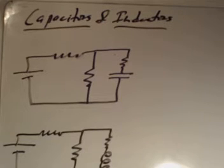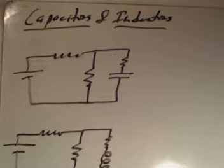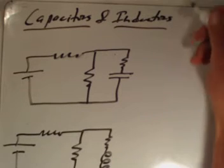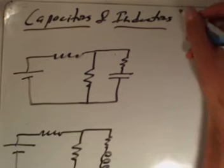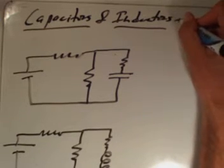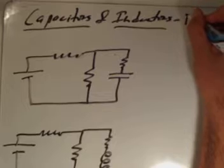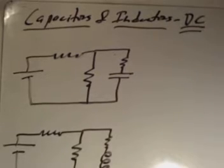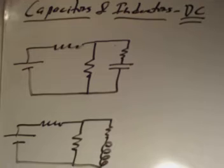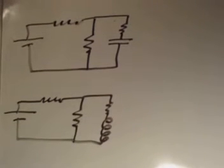In this video, what we'd like to do is discuss the DC circuit behavior of capacitors and inductors and compare and contrast them a little bit. If you put capacitors and/or inductors in different DC circuits, how do they behave? The circuits we'll choose to make things interesting are sort of ones that look like these here.